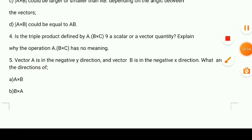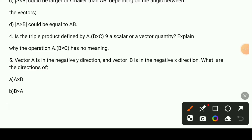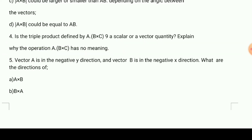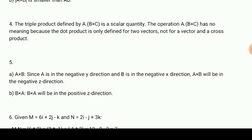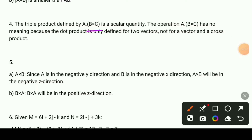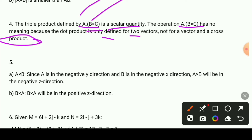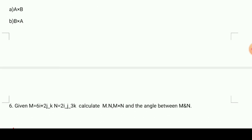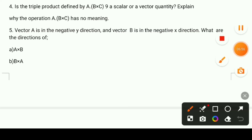The triple product a·(b×c): is this a scalar or vector quantity? The dot product is only defined for two vectors. Since b×c gives a vector, then doing a dot with that vector gives a scalar. So a·(b×c) is a scalar quantity. An operation like a·(b×c) has no meaning if interpreted incorrectly because the dot product requires two vectors as arguments.